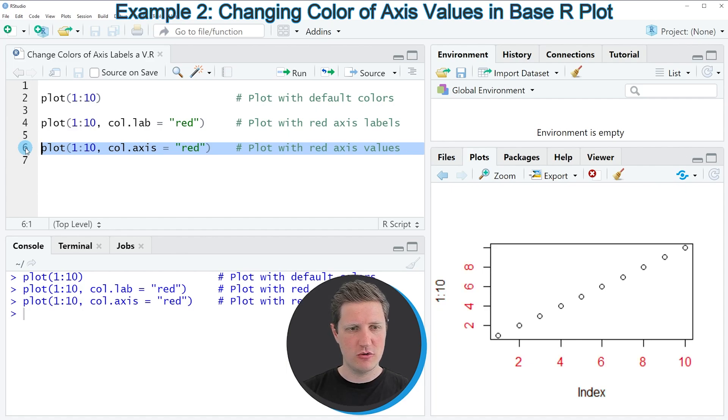If you run this line of code, you can see that another plot is created at the bottom right of RStudio. This time the labels are shown in black, however the axis values are shown in red.